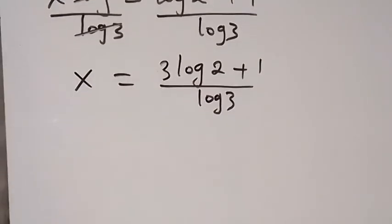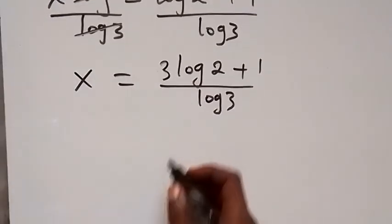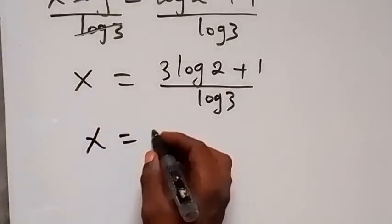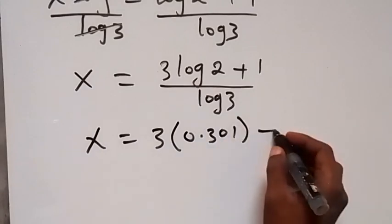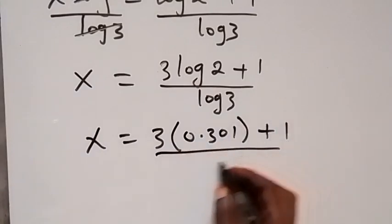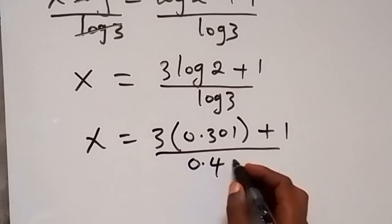When we put the values of log 2 and log 3, log 2 is 0.301, so x now equals 3 multiplied by 0.301 plus 1, then divided by log 3 which is 0.4771.